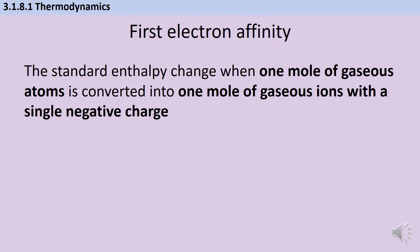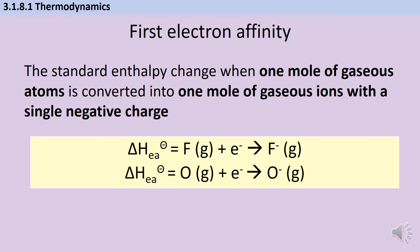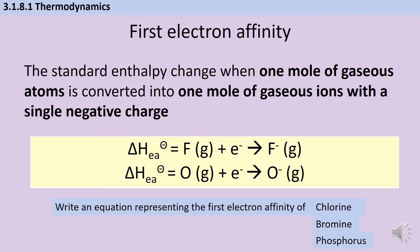The first new enthalpy change you meet in year 13 is electron affinity — I like to think of this as the opposite of ionization energy. Ionization energy involves taking electrons away; electron affinity involves adding them on. We're talking about a mole of gaseous atoms being converted into a mole of gaseous ions when they gain a mole of electrons. When writing an equation, it's always atoms on the left-hand side, not molecules. For the first electron affinity we're adding an electron and getting an ion with a negative charge.